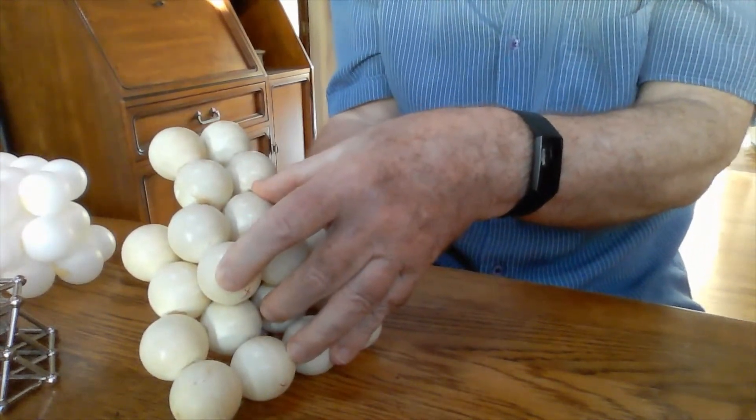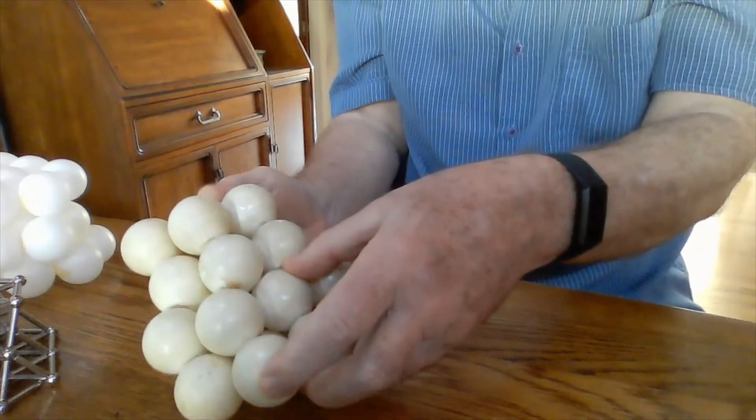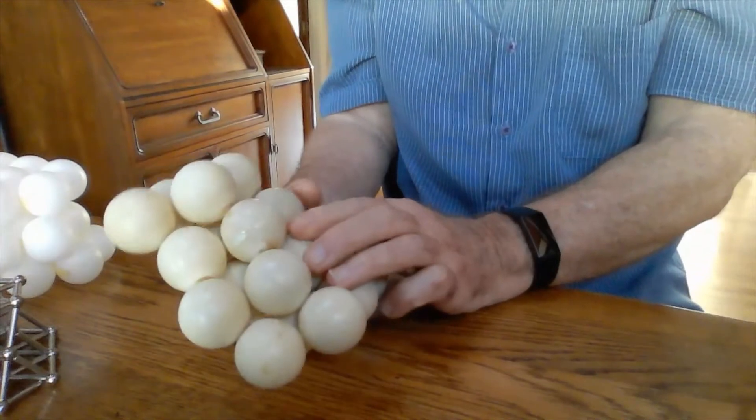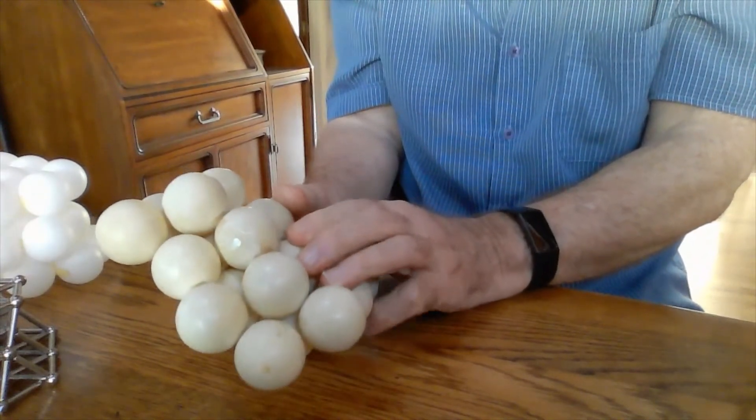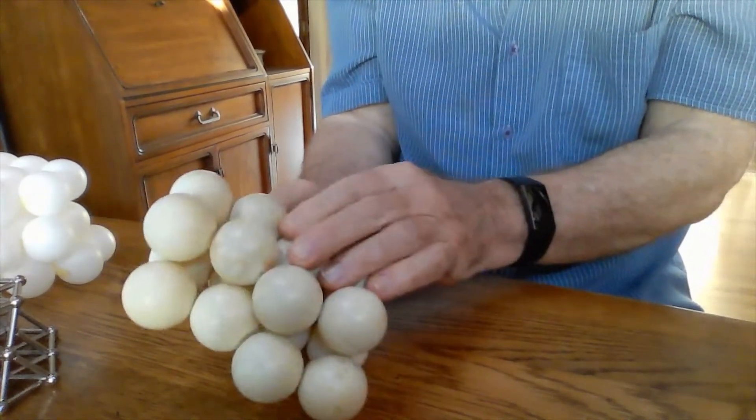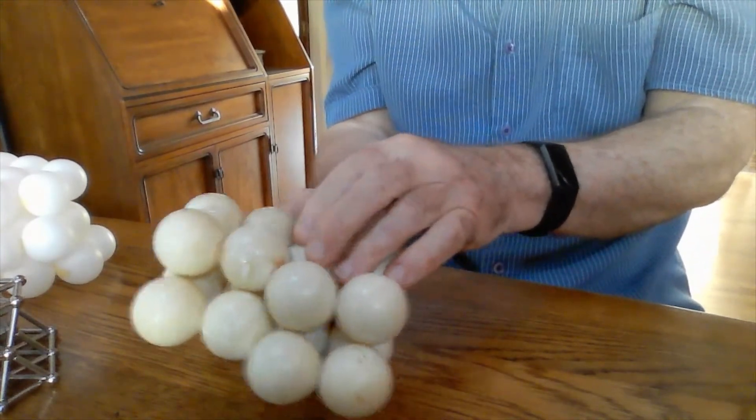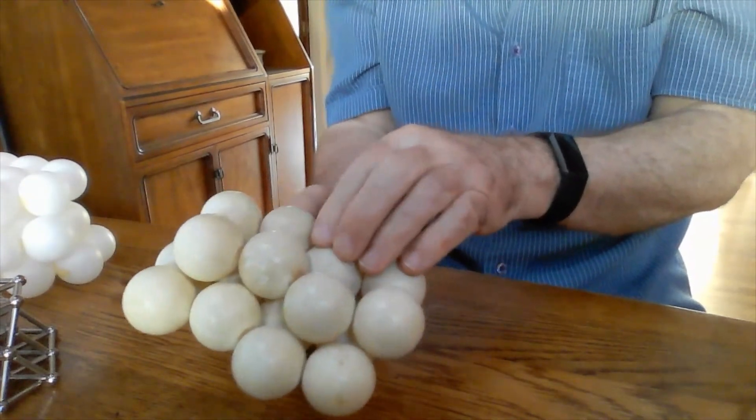So this is kind of an interesting slip system because of the three partials that are involved. And what that means, actually, because of the partials on successive planes, we have the option then for twinning on this plane. And I'll talk more about that in another video.